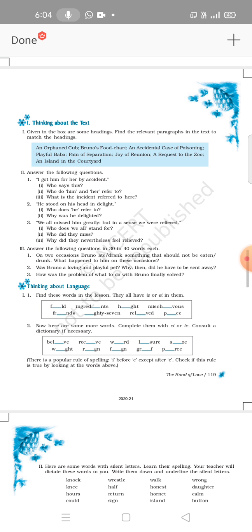Bruno's food chart - you can find this in paragraph number six. An accidental case of poisoning - paragraph number eight. Playful Baba - you can find this in paragraph number twelve.